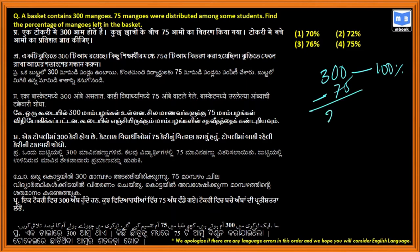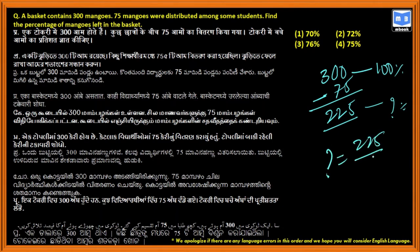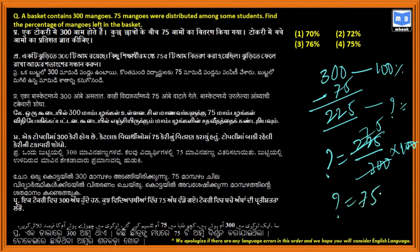The remaining mangoes are 225. What is the percentage of remaining mangoes? The percentage of remaining mangoes equals 225 divided by 300, multiplied by 100, which gives 75 percent.